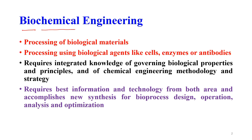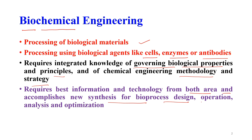In this introduction video, we will first start with Biochemical Engineering. As the name suggests, it combines biology and chemical engineering. Basically it processes biological materials using biological agents like cells, enzymes and antibodies, combining the governing biological properties and principles along with chemical engineering methodology and strategy. It requires the best information and technology from both areas to accomplish new synthesis for bioprocess design, operation, analysis and optimization.